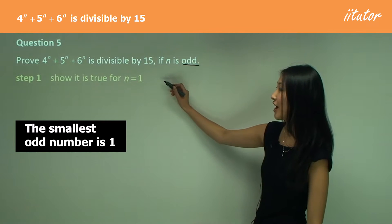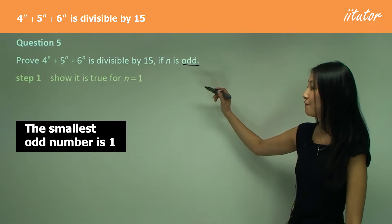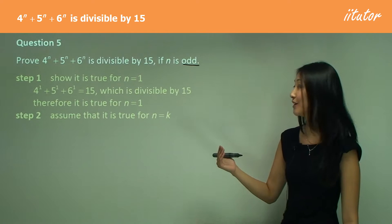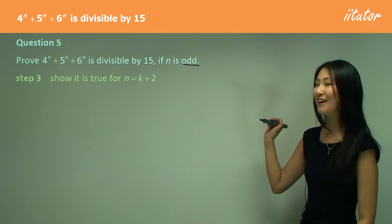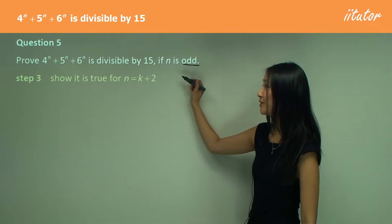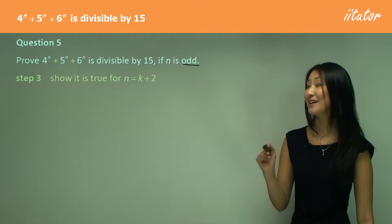Step one is to always show it's true for the first n value. In step two, we assume it's true for n=k. In step three, let's show this is true for n equals k plus 2.